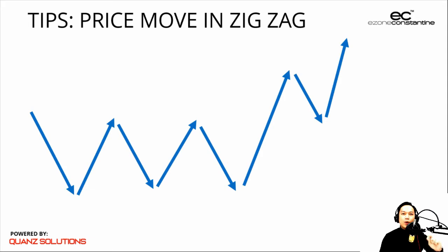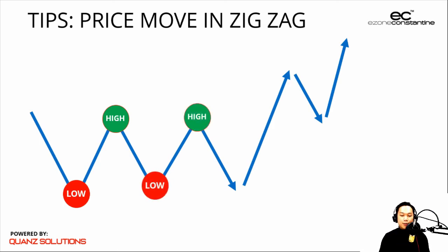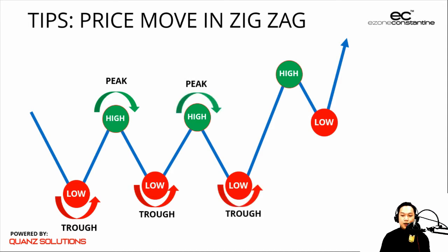When the price moves in zigzag, you will always discover that there are rebound points and reversal points. When it rebounds from the low, we call this a low pivot point. When it goes to the upper side, we call this a high pivot point. Pivot means turning point — it always reverses after hitting a certain area. So we have low pivot point, high pivot point — low, high, low, high. Some also use the terms trough and peak: the peak, the trough, the peak, the trough.